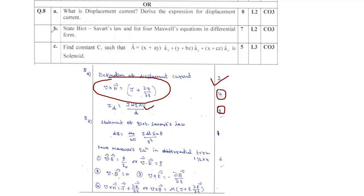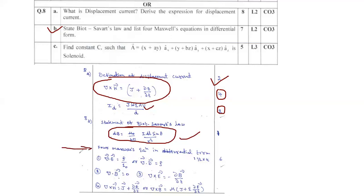Question 8b: State the Biot-Savart law and list four Maxwell equations in different forms. The Biot-Savart law is one of the popular equations in electromagnetism. You should write the Biot-Savart law with the statement. The key equation is: dB = (μ₀/4π) · (I·dl·sinθ / r²). This same equation will be useful later in your field theory course.